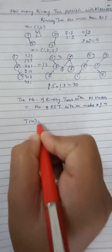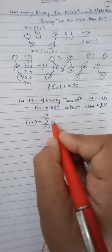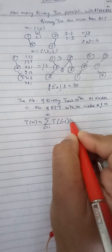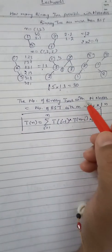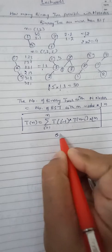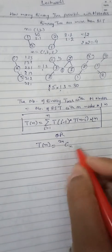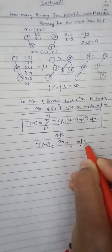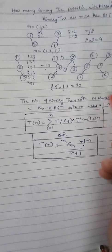So the formula is: the number of binary trees with n nodes equals the summation from i equals 1 to n of T(i-1) times T(n-i) times factorial n. Alternatively, T(n) equals (2n choose n) times factorial n divided by (n+1). These are the two formulas by which we can calculate how many binary trees are possible with n nodes.